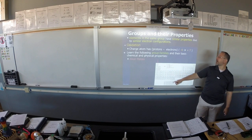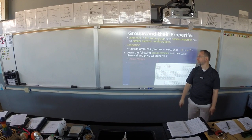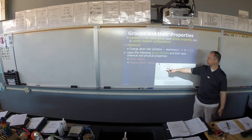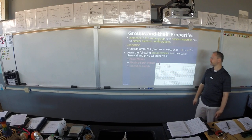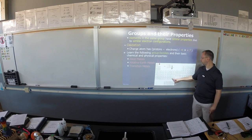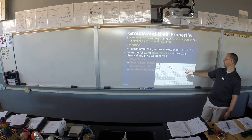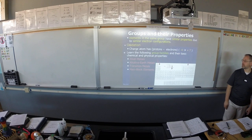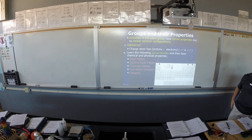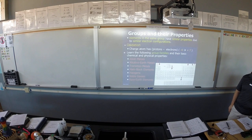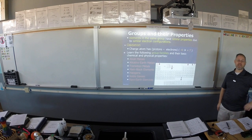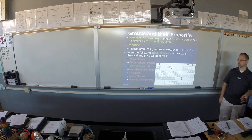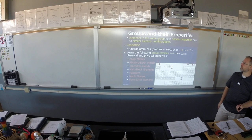So: alkali metals — lithium down; alkaline earth metals — beryllium down; the transition metals; this rectangle here is the main block or p-block elements; the halogens are a special group of the main group; and then our noble gases at the end. At the bottom we have our rare earths. Today we're going to talk about the properties of each individual group.